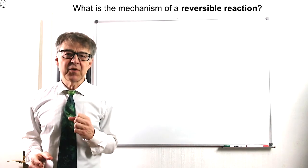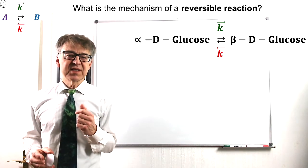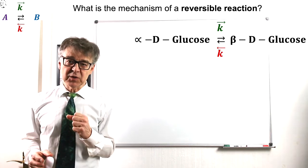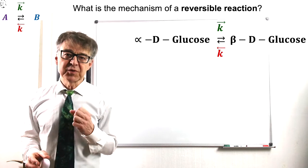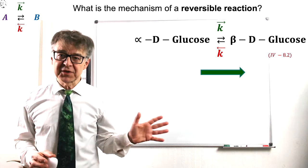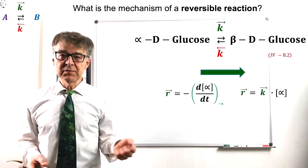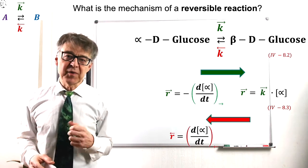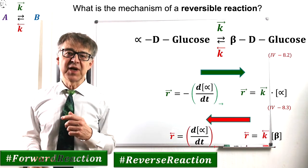An example for a reversible reaction is the conversion of alpha-D-glucose into beta-D-glucose, the so-called mutarotation. The mechanism consists of a forward reaction from alpha to beta, with the rate law, and the reverse reaction from beta to alpha, with another rate law shown here in red color.